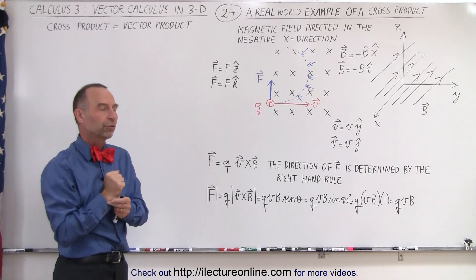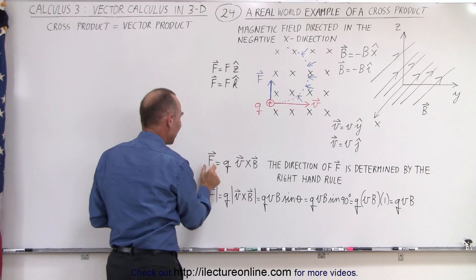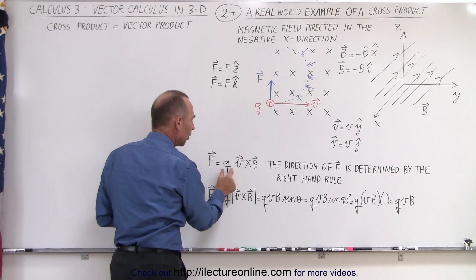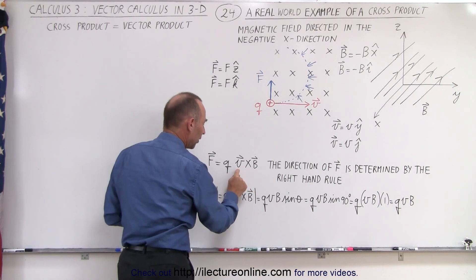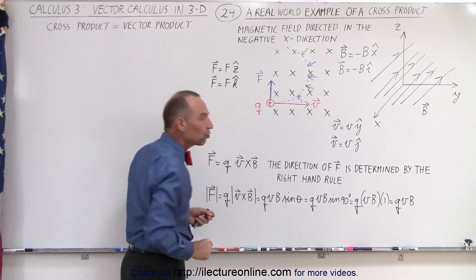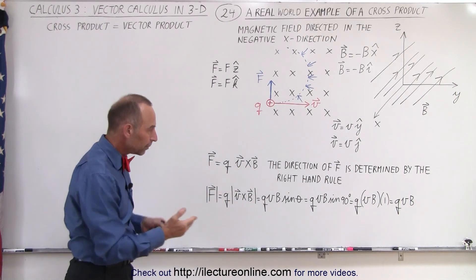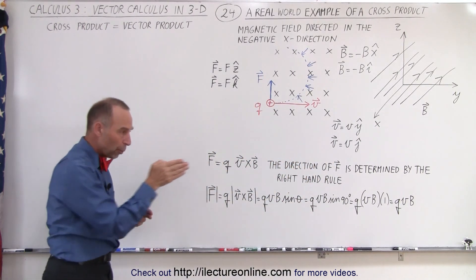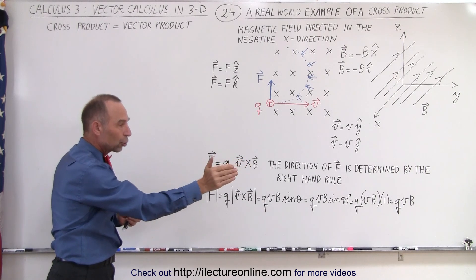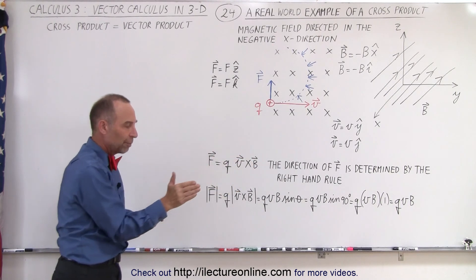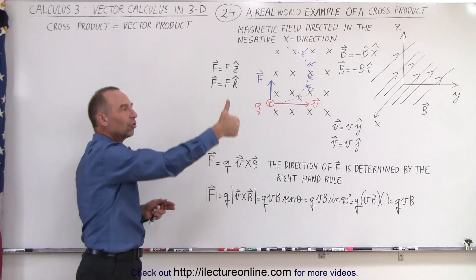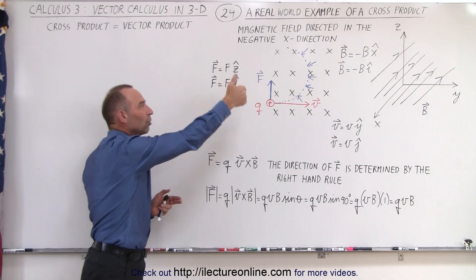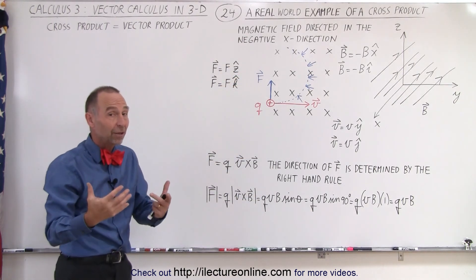What we're going to do here is show how the cross product actually helps us figure out the magnitude and the direction of the force. It turns out that the magnitude of the force is equal to the size of the charge times the cross product of the velocity and the strength of the magnetic field. The direction of the force is determined by the right-hand rule: you point your fingers in the direction of the velocity, curl them in the direction of the B field — which is into the board — and your thumb points in the direction of the force.